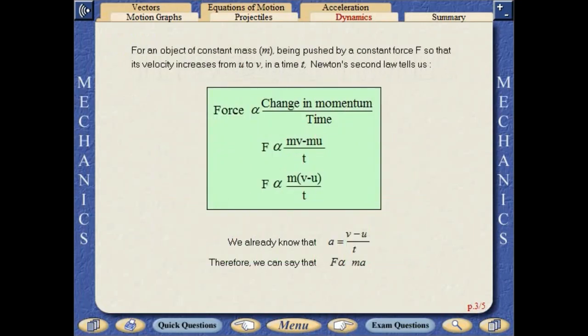For an object of constant mass being pushed by a constant force so that its velocity increases from u to v in a given time, Newton's second law tells us that the force is proportional to the rate of change of momentum. We already know that a equals v minus u over t, so we can say that f is proportional to ma.